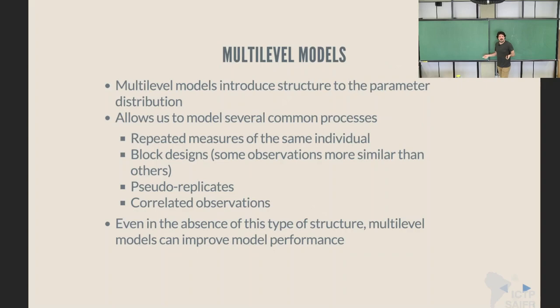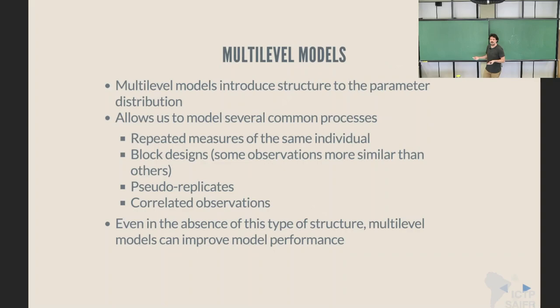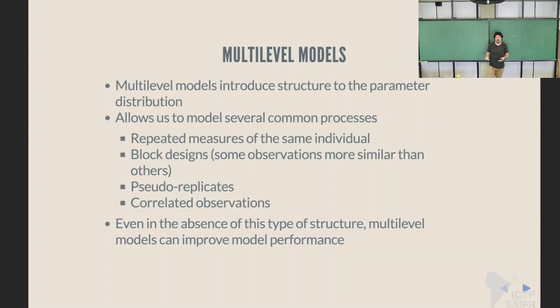Block designs — sometimes experiments are so big that you can't do them all at once, so you might do part of the experiment one day and part the next day. This introduces subtle similarities into all experiments done on the same day that are different from the next day — maybe the temperature is different, maybe the experiment is different. You can also assign parameters to capture this variation. One broad class that's important is correlated observations, which is a continuous version of this idea of having blocks of measurements that are more similar, where each pair of observations has some underlying similarity to take into account.